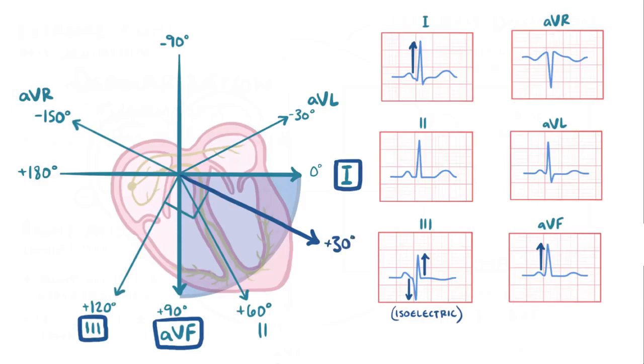Notice that this happens to sit on the same line as AVR, but in the opposite direction. So we'd guess that this vector should look negative in AVR. And in fact, it does.